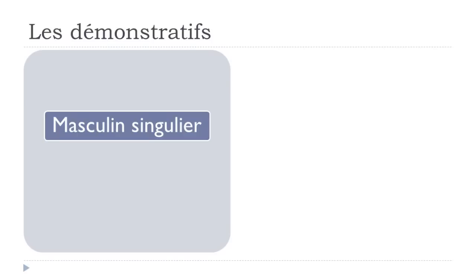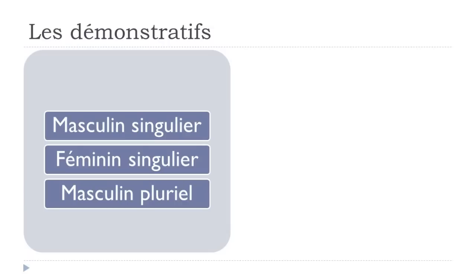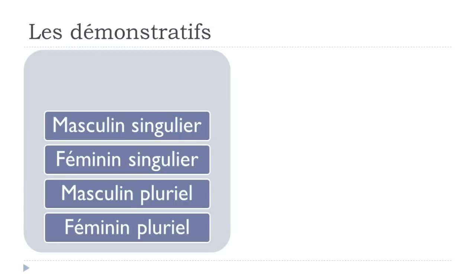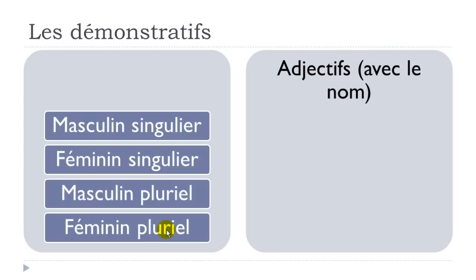For the adjectifs démonstratifs, we'll see the masculine singular form, feminine singular form, masculine plural form, and then feminine plural form. When we talk about les démonstratifs, technically it would be translated in English as 'this.' In French, we have the difference between the masculine and feminine form, and then masculine plural and feminine plural.